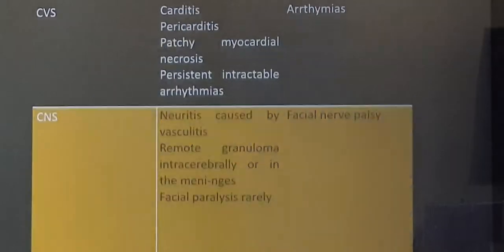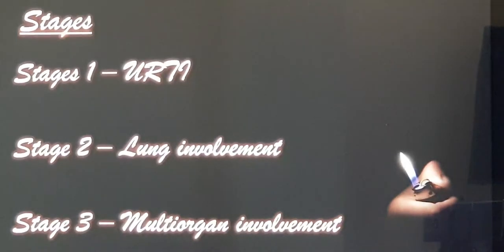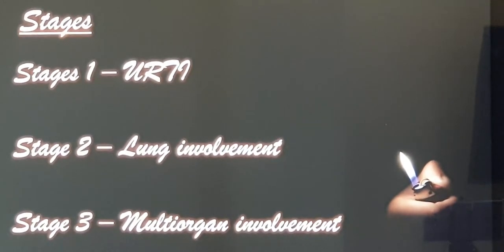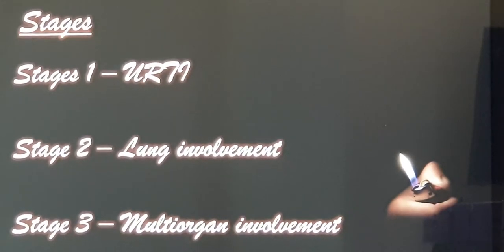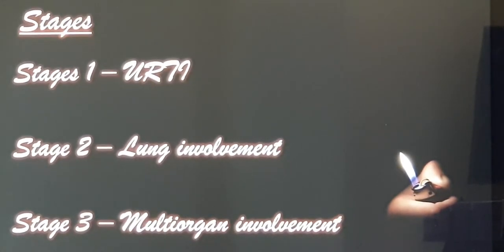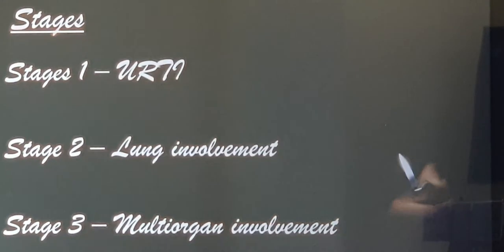Now if you come to the investigation, before that let me tell you the stages. Stage one means the patient has upper respiratory symptoms which correlates with the upper respiratory infection. But this becomes persistent, it continues and the lung will be involved and he goes into stage two. When all the other organs get involved he goes into stage three. These are the different stages of the condition of the disease.